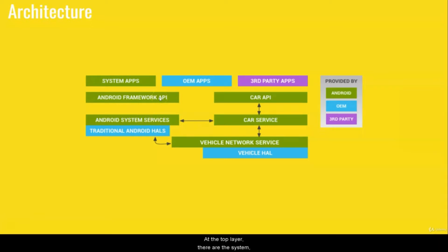At the top layer, there are the system, OEM, and third-party apps. These are pure Android apps which are developed in Java or Kotlin using Android Studio.